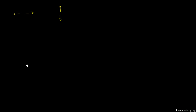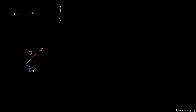So let's say I have a vector right here — that is vector a. Its magnitude is specified by the length of this arrow, and its direction is specified by the direction of the arrow. And let's say I have another vector — let's call it vector b. And what I want to do is think about what happens when I add vector a to vector b.